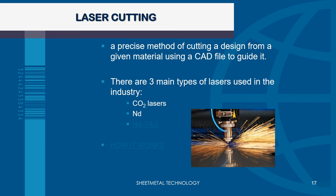Laser cutting is a precise method of cutting a design from a given material using a CAD file to guide it. There are three main types of lasers used in industry: CO2 lasers — which we currently have in our lab and are the most popular — neodymium (Nd), and neodymium YAG (Nd:YAG, neodymium aluminium garnet). These refer to the lasing material, which is the source of the laser.